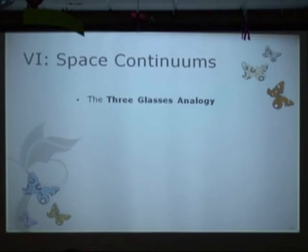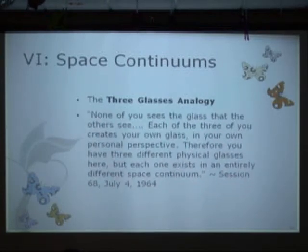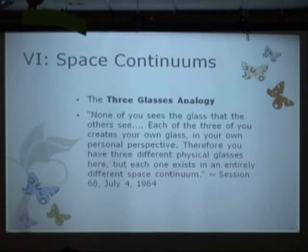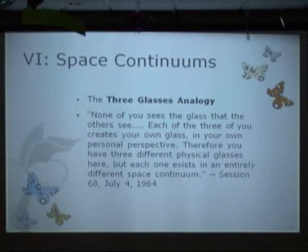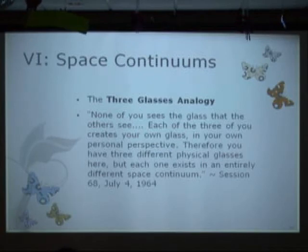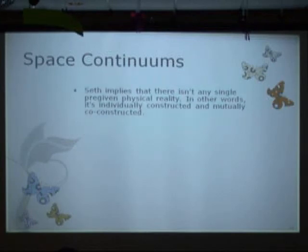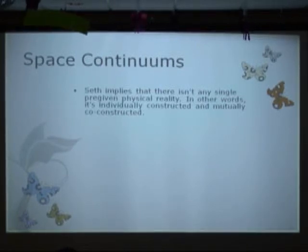Ramping back up into intellectual mode a little bit more now. I wanted to investigate the three glasses analogy, because that has interesting implications for us. Seth says that none of you sees the glass that others see — each of the three of you creates your own glass in your own personal perspective. Therefore, you have three different physical glasses here, but each one exists in an entirely different space continuum. So Seth, by implication, is saying that there isn't a single pre-given physical reality or framework one. In other words, it's individually constructed and mutually co-constructed. And back to these quadrants — why they're so important from the integral map — this is where all the individual and collective activities are situated, to help us understand their relationship to each other.